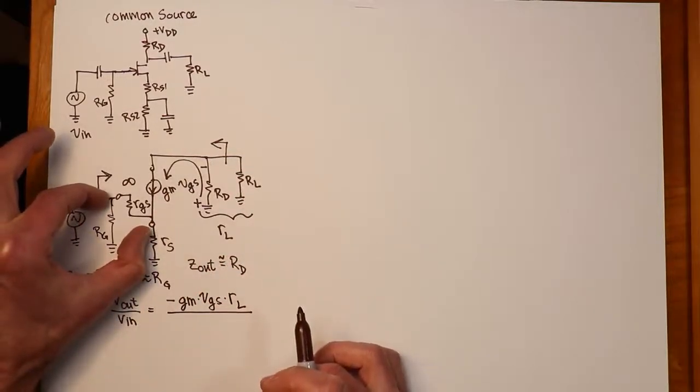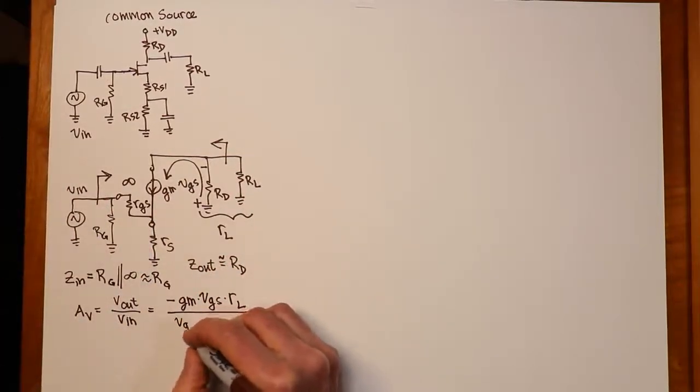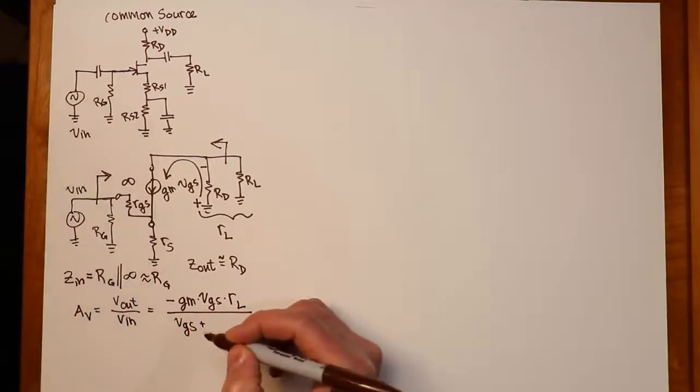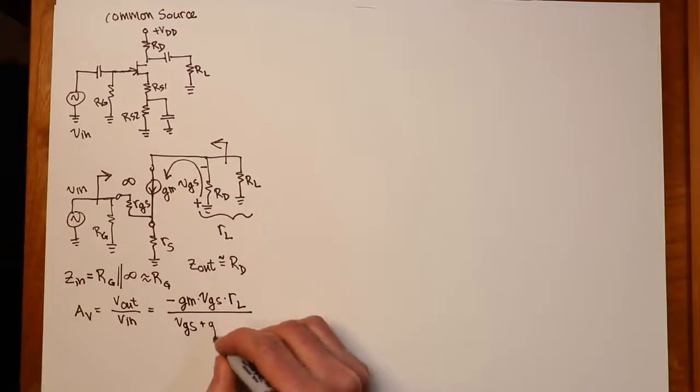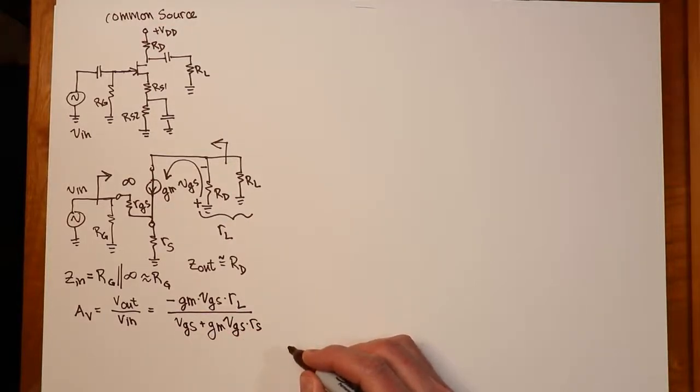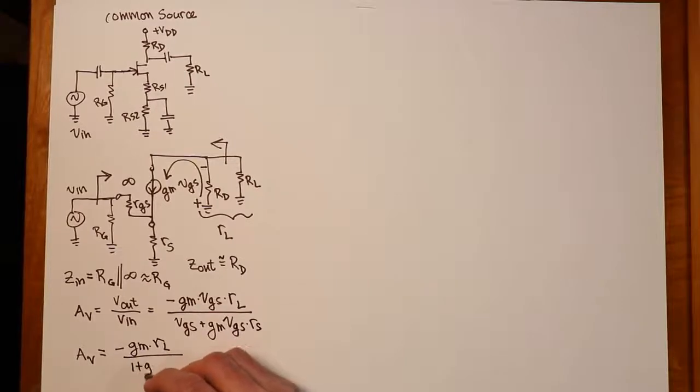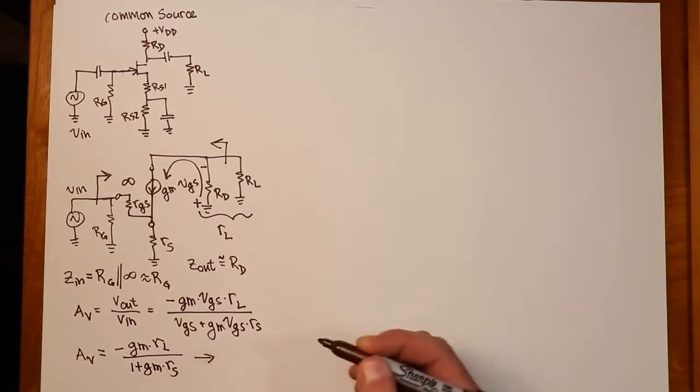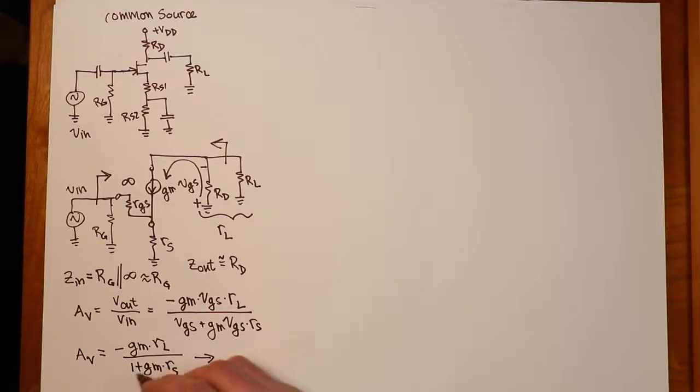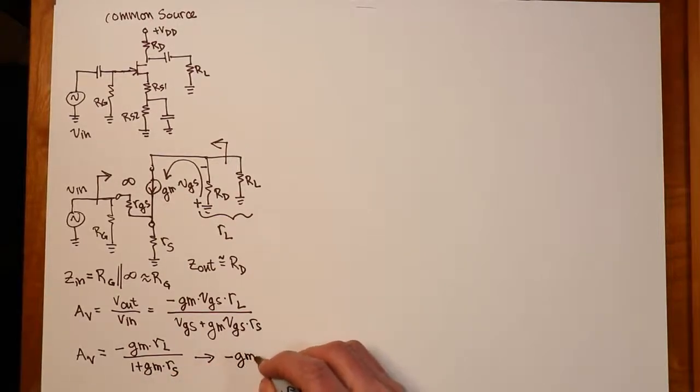We're going to divide that by the input value. Well, what's the input? That's two things. That's the gate source voltage plus the drop across RS. What is the drop across RS? It's RS times the current through it. In other words, it's GMVGS times RS. I can factor out the VGS here. And then we can divide through, get rid of that. And the gain just works out to a negative GMRL divided by 1 plus GMRS. Now, if we don't have it swamped, RS is zero. This term falls away and the gain simplifies to negative GMRL if it's not swamped.